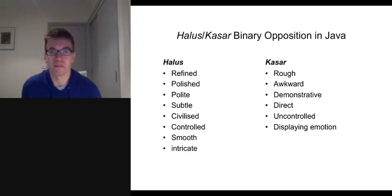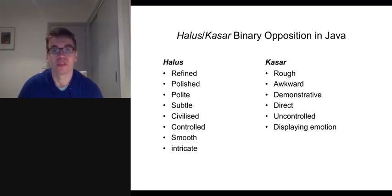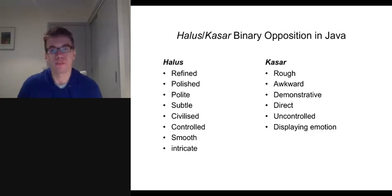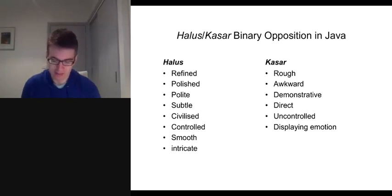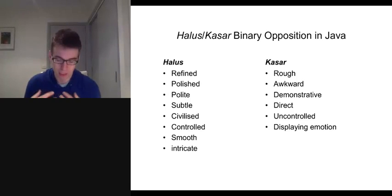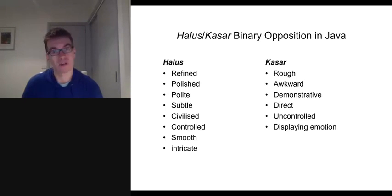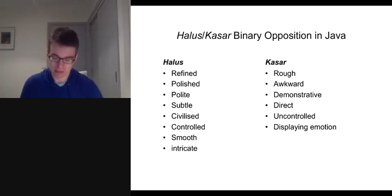In Java there exists a binary opposition or a dichotomy between two aesthetic values: Alus and Kasar. Even though Alus is spelled with an H, it tends to be pronounced with a silent H and can also be spelled A-L-U-S in the literature. In Java, value is really placed on things that are Alus — in the performing arts, in social interactions, in everyday life. Someone who is Alus is well-mannered, well-behaved, and conducts himself in a polite manner at all times, and is seen to have an inner strength and inner power.